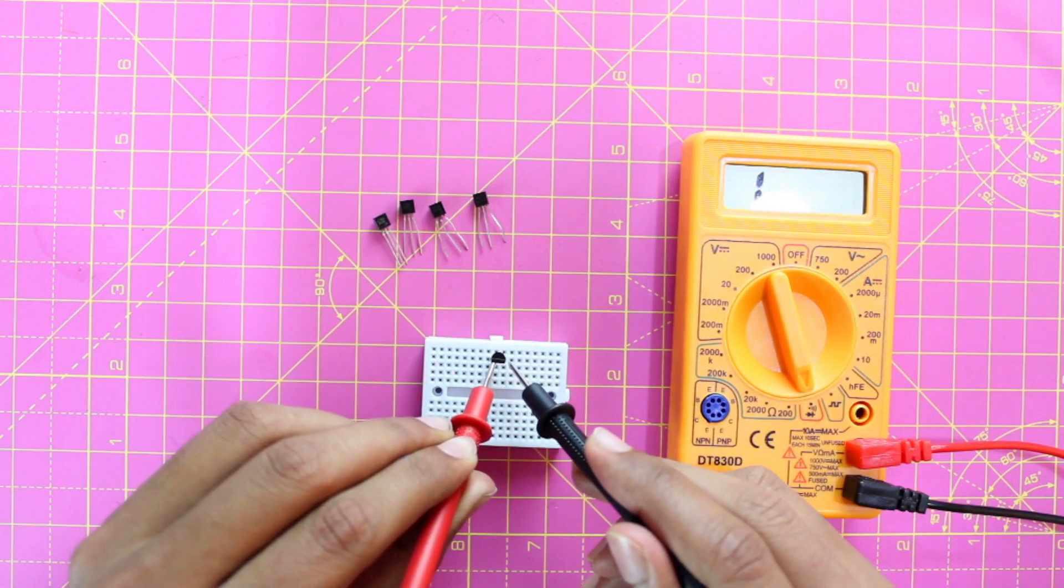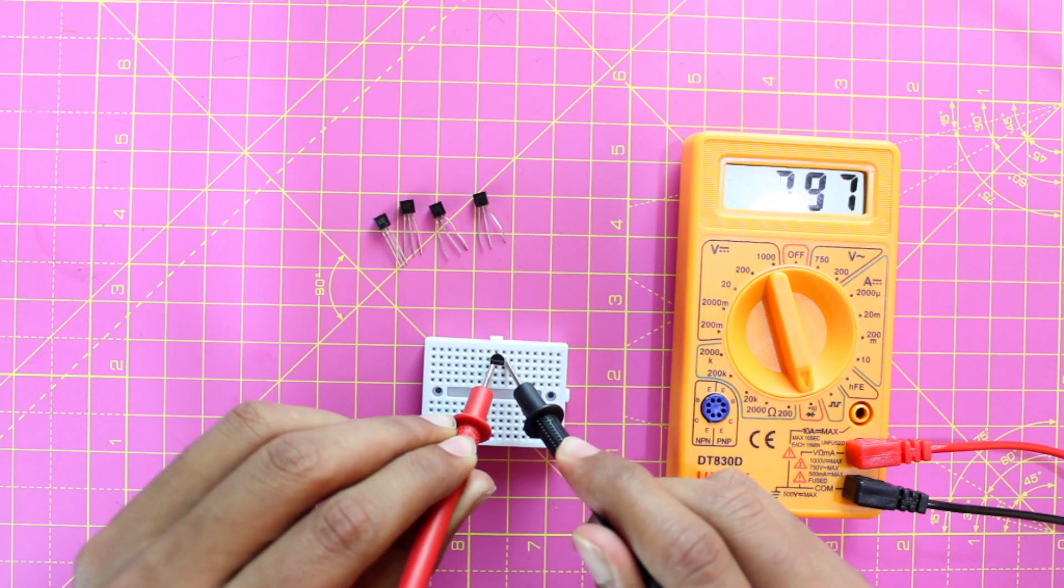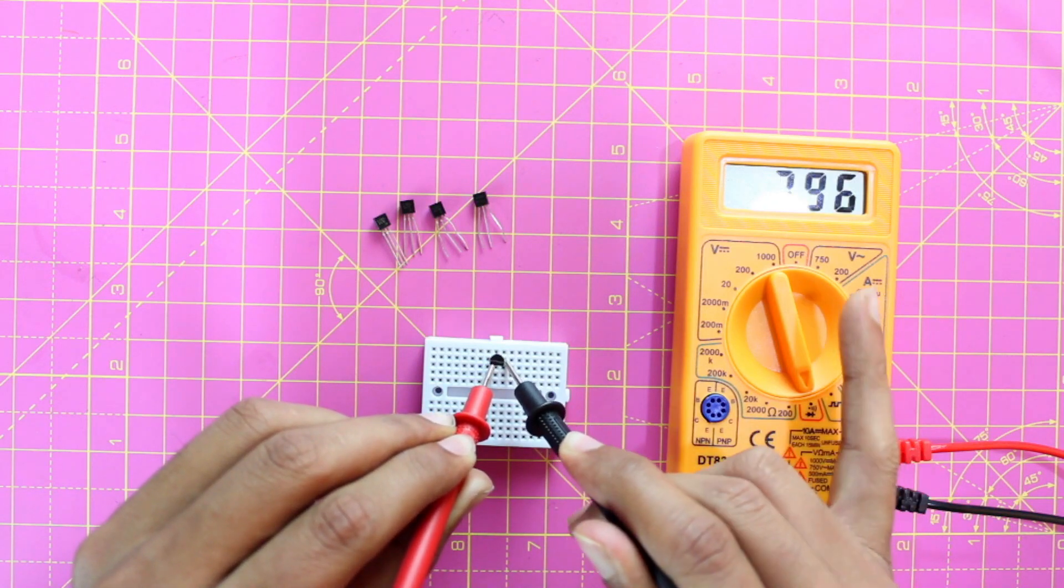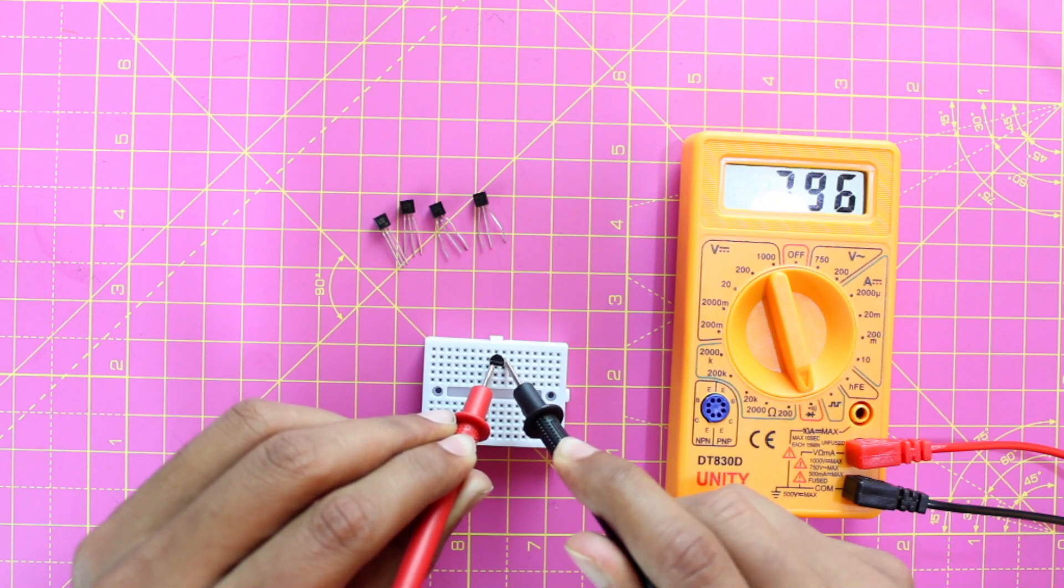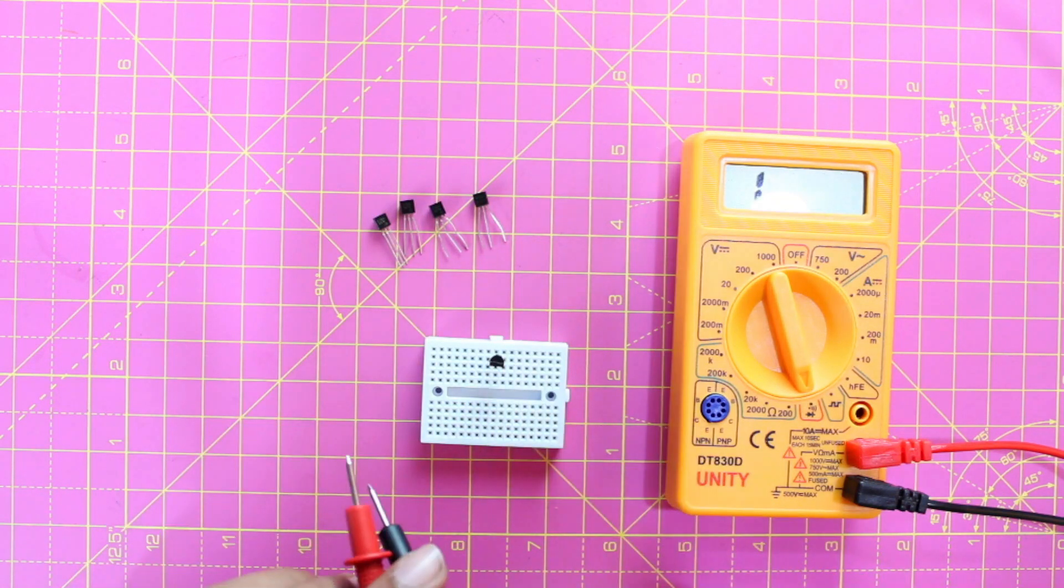I'll just place the probe here and check if I'm getting any voltage drop. Okay, again I'm getting a voltage drop of 796 millivolts. So this means this transistor is perfectly working.